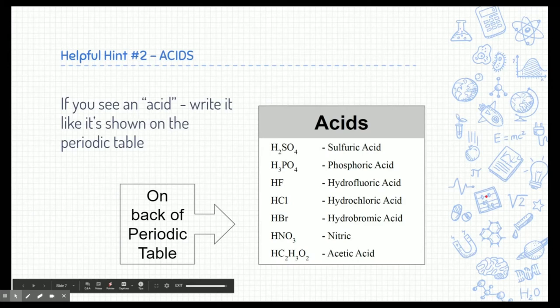The second helpful hint when we write chemical reaction equations is acids. We didn't get a chance to talk about acids this semester, but later on in AP Chemistry or Chemistry 2, we'll learn more. For now, it's really easy — just check on the back of your periodic table. There's a list of acids back there, so if you ever see acids in a chemical reaction equation, just write what you see on the back of the periodic table.